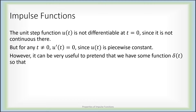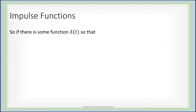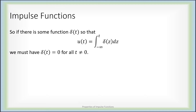So while this function does not have a derivative at zero, it can be very useful to pretend that there is a function called delta of t, so that the unit step function is the integral of delta of z dz. If such a function were to exist, and if we could apply the fundamental theorem of calculus to it, then for any t other than zero, u prime of t would simply be delta of t. But u prime is zero other than at zero, so delta of t is zero everywhere except at zero.